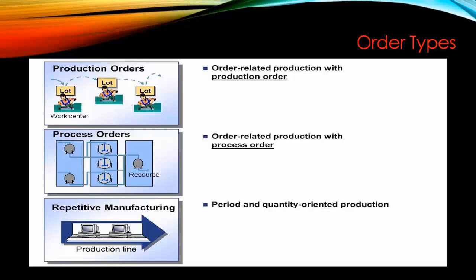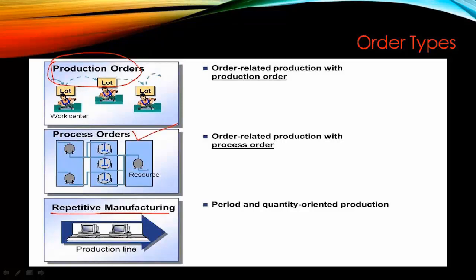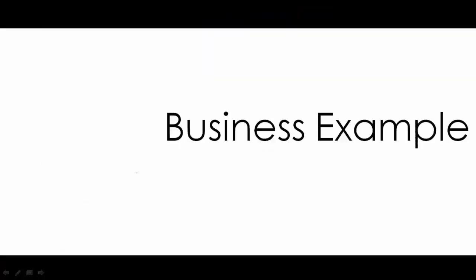Previously we have learned about Production Orders. So basically there are three types of orders. One is the Production Order that we have seen earlier. In this class we will talk about the Process Order, and in a later class we will talk about Repetitive Manufacturing. So let us start with the Process Order in this class.